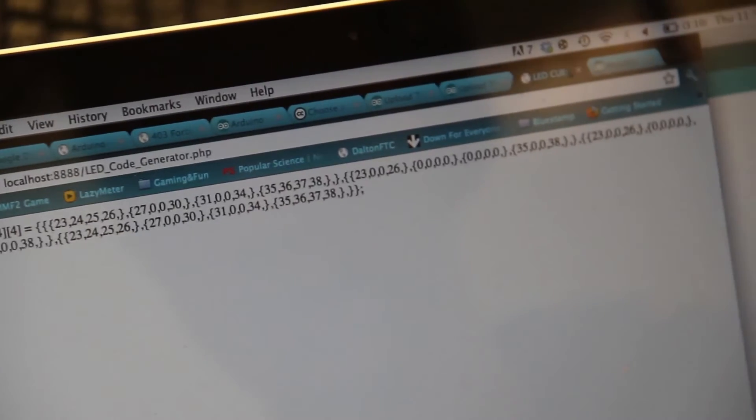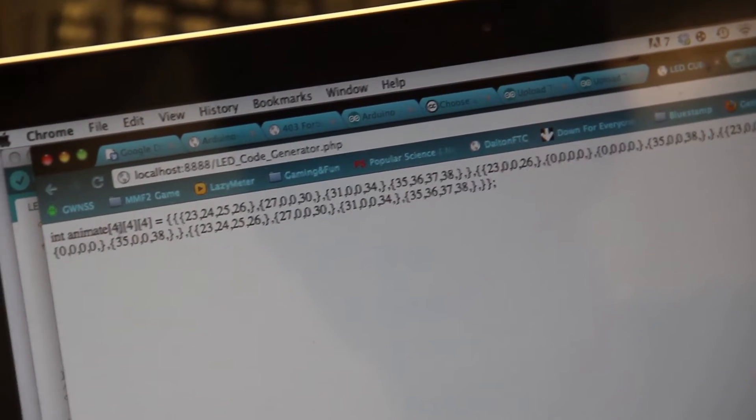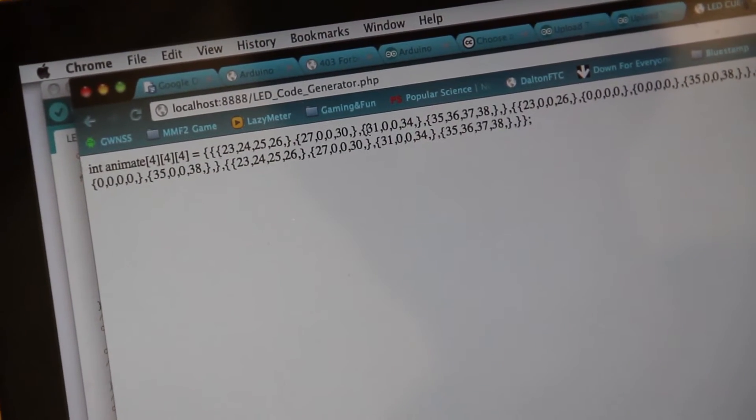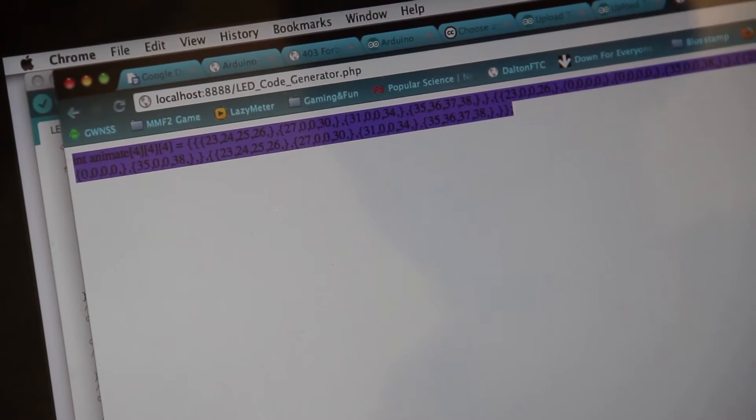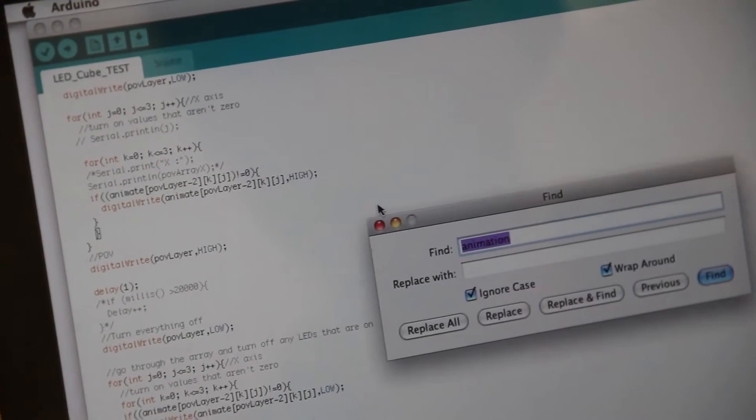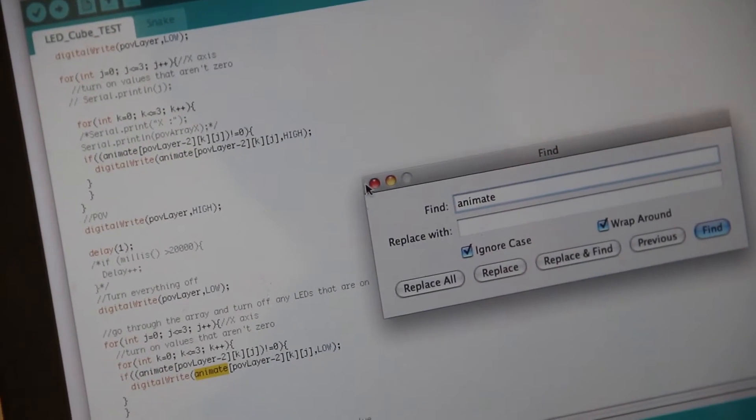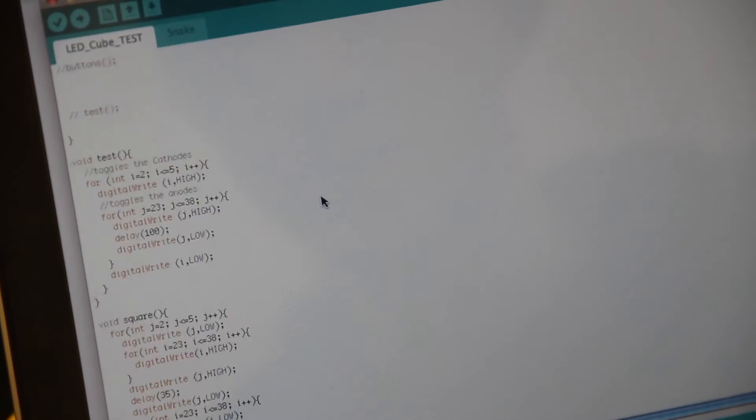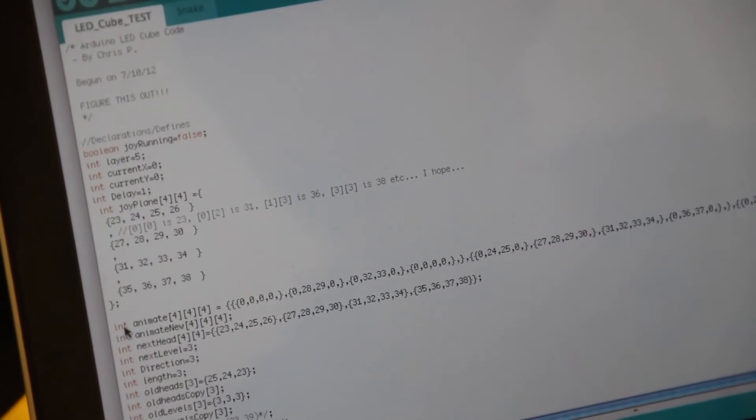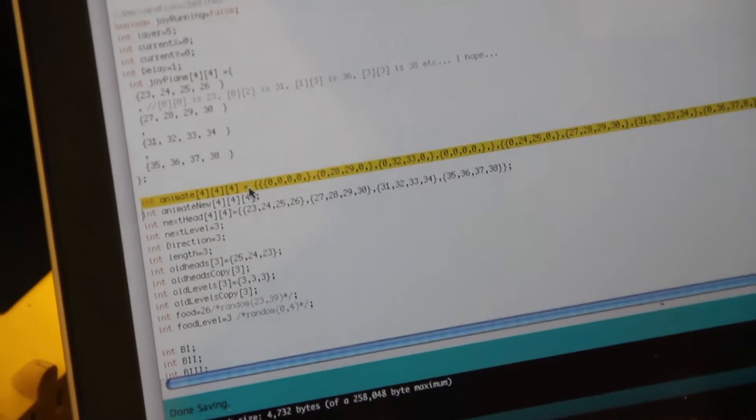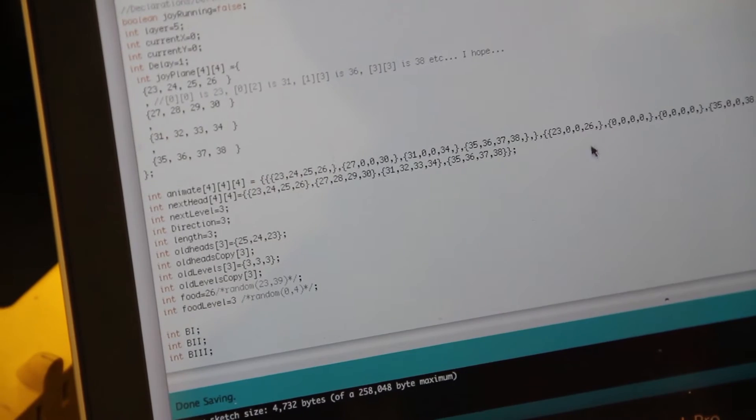So here you see it made the animate array, which is a 4x4x4 three-dimensional array. So now I can copy this, go into Arduino, find the previous animate. Oh no, it's all over the place. Up in my declarations. So here it is. I'll just paste it. So this is the new one that I just made.